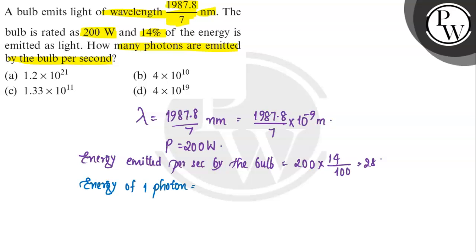So this will be equal to hc/λ. We have the formula. h value is 6.6 × 10^-34, c value is 3 × 10^8, divided by lambda, which is given in the question as 1987.8 × 10^-9 divided by 7.